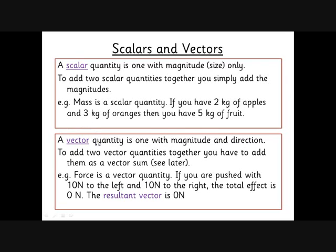A vector quantity is one which also has a magnitude and a direction. The example you'll be familiar with from year 7 is force. If you've got a 10 newton force to the left and a 10 newton force to the right, it might look as if you've got 20 newtons, but the total effect, the resultant vector, is 0 newtons.